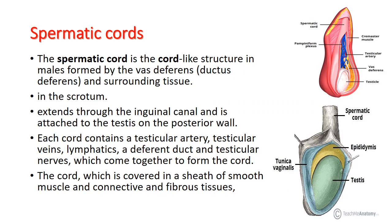The spermatic cord is a cord-like structure in males, formed by the vas deferens and surrounding supporting tissue. It extends through the inguinal canal and attaches to the testicles from the posterior wall. Each cord contains the testicular artery, testicular vein, lymphatic system, different ducts, and testicular nerves, all coming together to form the spermatic cord, which is covered in a sheath of smooth muscle and connective fibrous tissue.